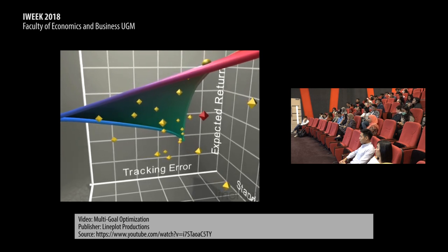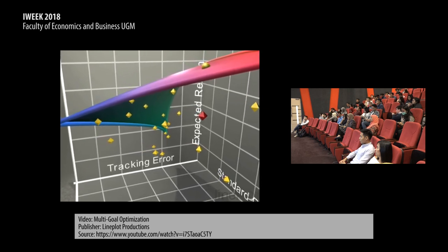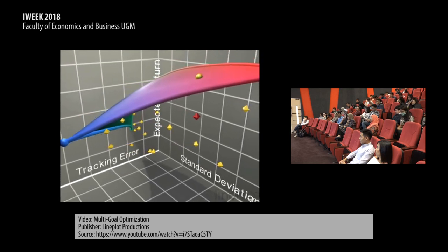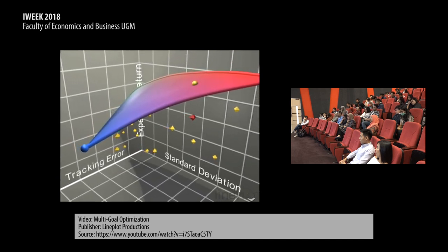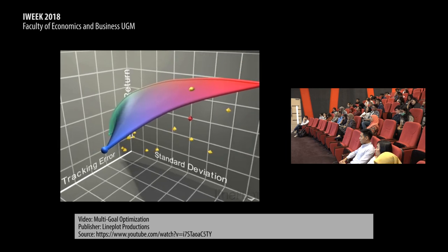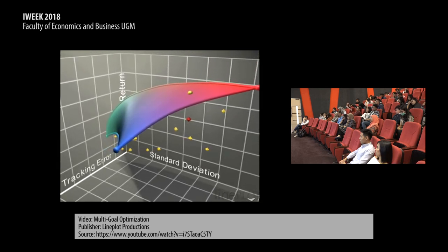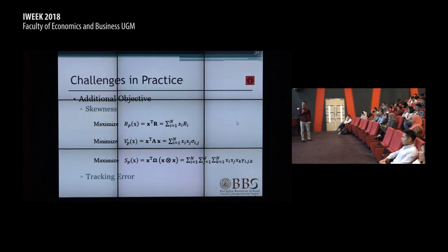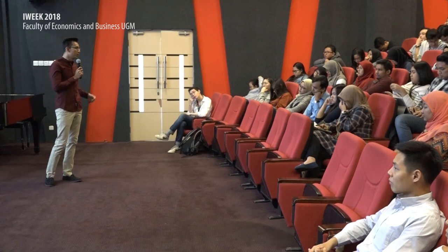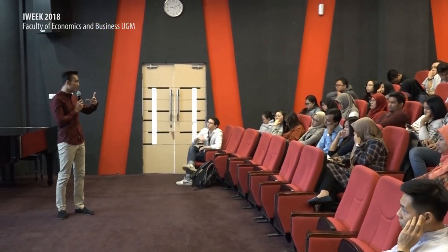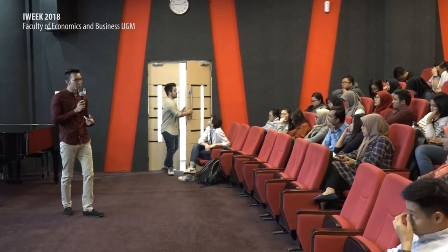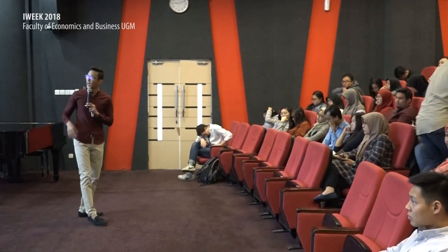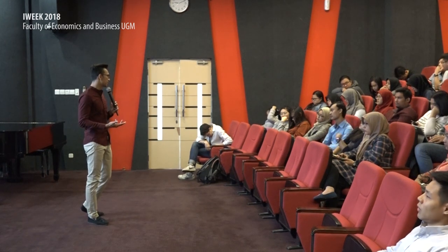Many investors care about both absolute and relative performance. In some cases the benchmark serves as a performance standard; in other cases it represents liabilities such as the present value of benefit payments or spending obligations. So this is an example of the challenge in practice — when we increase additional objectives, the searching space increases from two dimensions to three. Once you have more than three objectives, our human ability won't be able to visualize that. So when we add a fourth, fifth, or sixth objective, we can't do it with simple linear programming like Excel. We need to create our own algorithm to solve all these problems.